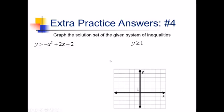On this problem, we're being asked to graph the solution set of this system of inequalities. So to do this, we're going to graph each of these individually and then see where these shadings overlap. For this first one, we have a parabola in standard form. So we're going to start by getting the vertex, then we'll get the y-intercept, and we'll use symmetry to get another point.